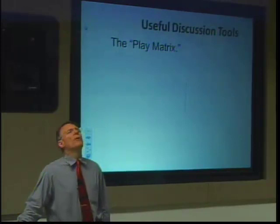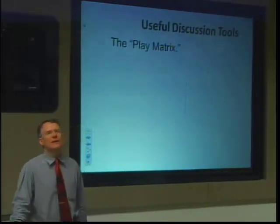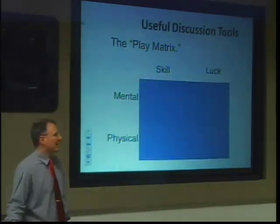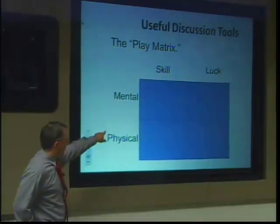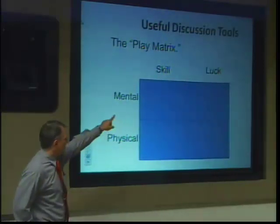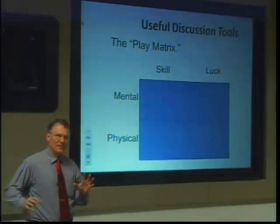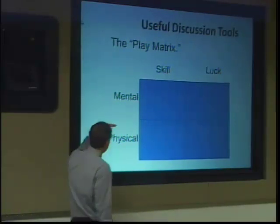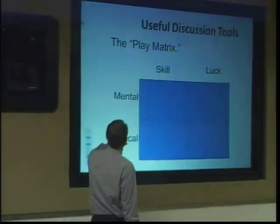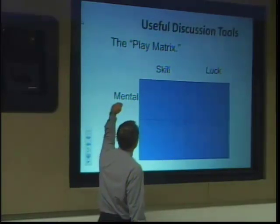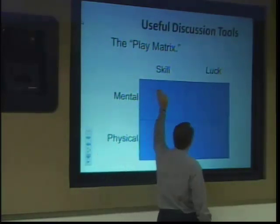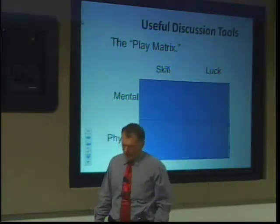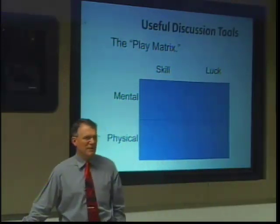One useful discussion tool pointed out by your book is called the Play Matrix. It is a grid of four boxes where you can graph the characteristics of a game based on how much physical challenge it offers, how much mental challenge it offers, how much skill it requires versus how much luck it requires. Let's give some examples of putting things on the play matrix.